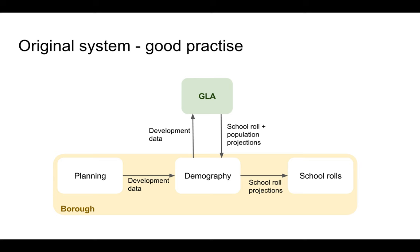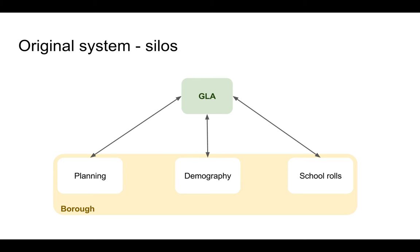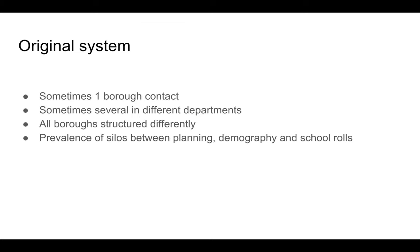The demographer would pass the school rolls projections on to the school rolls officer. This was good practice known to occur in at least one borough. However, when a planning department communicates directly with the GLA, other users don't have access to the data unless it's explicitly emailed or shared in some way. So each department could interact independently with the GLA. What we know about the original system is that sometimes there's one borough contact, sometimes there's several. All boroughs seem to be structured differently, and there was a prevalence of silos in some boroughs between departments.